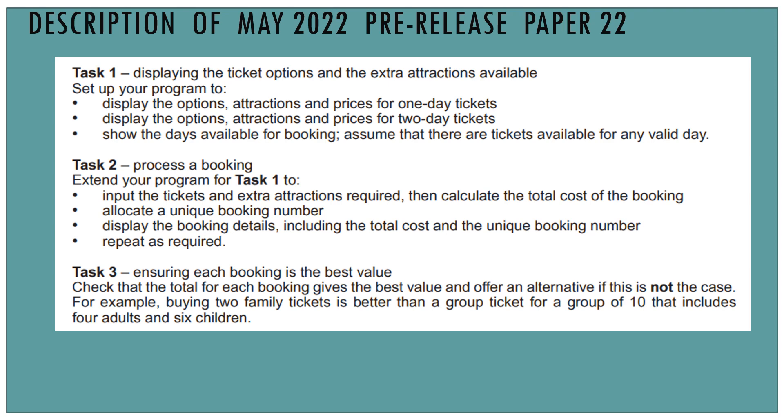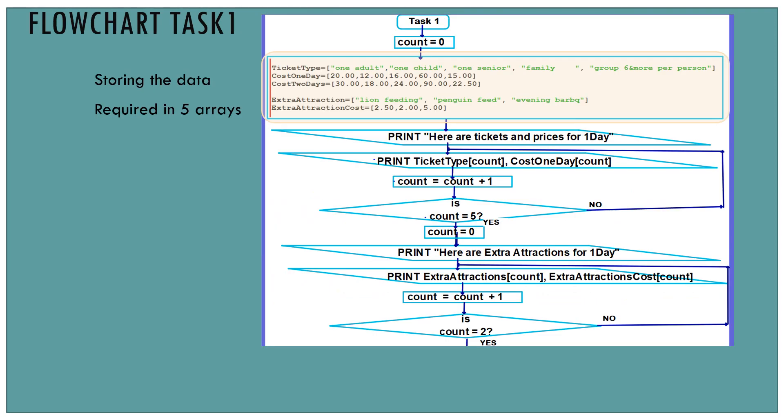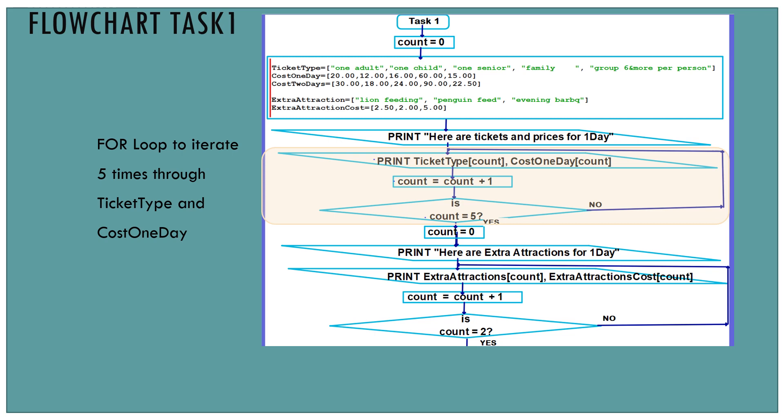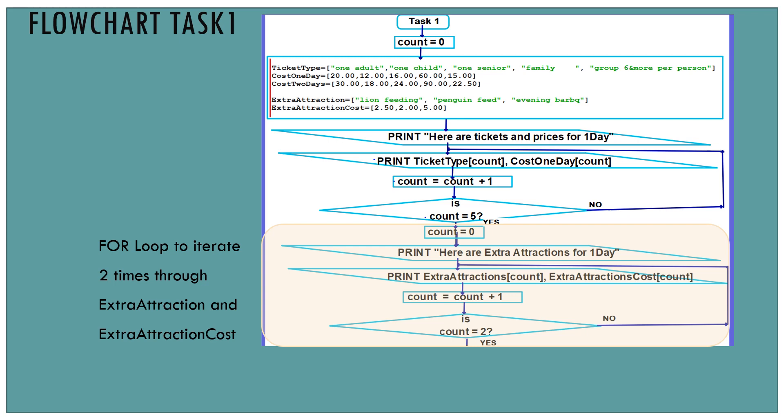Quick recap of task 1 in the form of a flowchart. At the beginning of any algorithm we're going to have initializations or storing data. Here are the data that we need — they're stored in five arrays. Highlighted we have a for loop, and this for loop is going to iterate five times — count equals one, two, three, four, five — to show what is inside the array ticket type and cost one day. When we finish iterating five times through those two arrays, we have another for loop which we're going to iterate two times through the extra attractions array and the extra attractions cost array.